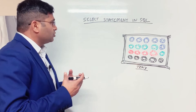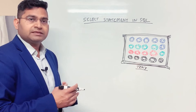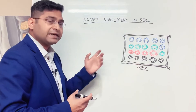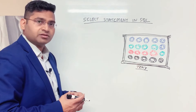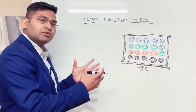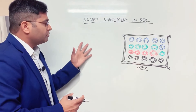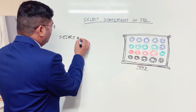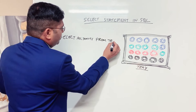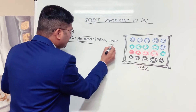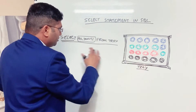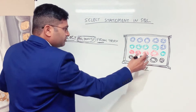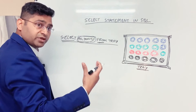Say for example, I am instructing you to select all the donuts from the tray. This is a plain English statement — because you understand English, you will be able to pick that up and select all the donuts on the tray. So there are 20 donuts, and you will be able to return all 20 donuts to me when I specify this. So: select all donuts from tray.